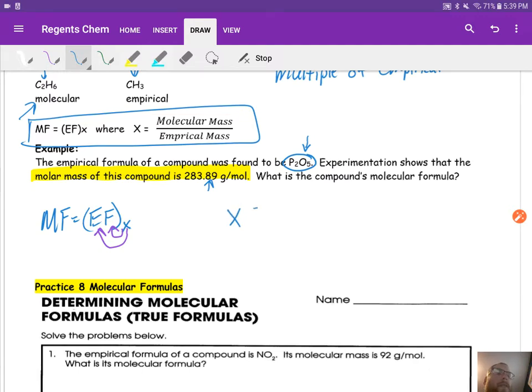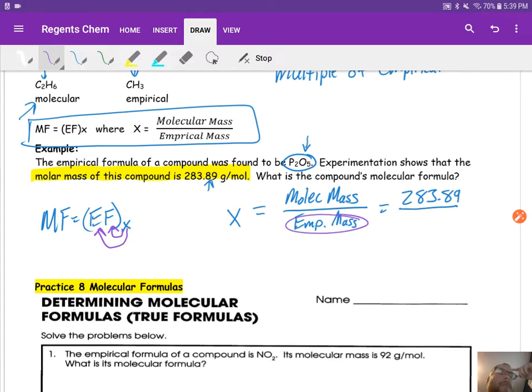So X equals my molecular mass, which is given to me, it has to be given to you otherwise you can't do the problem, over my empirical mass. So in this case, 283.89 divided by, was I given my empirical mass? Not directly, but I have the empirical formula. So we can then go ahead and we can calculate the empirical mass from that, right? Just get the molar mass.